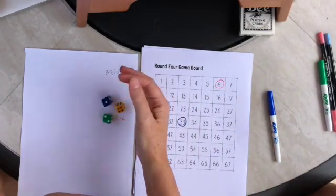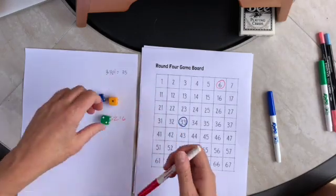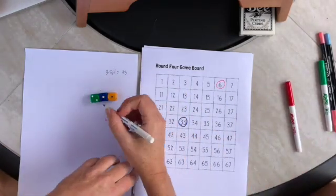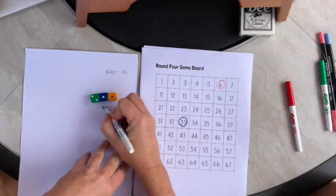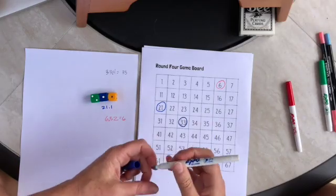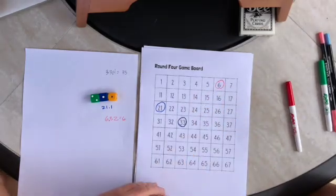So we go back and forth, rolling and making new numbers. I might do 21.1 and circle a 21, until one person gets four in a row.